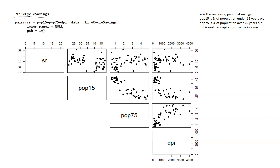So SR is our response, and it's a personal savings measurement. What the authors of this study were trying to do is model this personal savings measurement by using a couple of different variables. I only grabbed a couple — the details of the study are all on R and it is a bit more complicated. The goal for this video is just to explain what a scatterplot matrix is giving you.